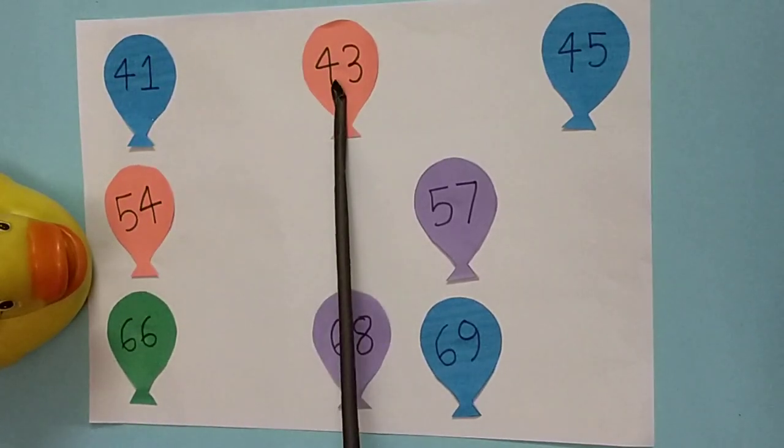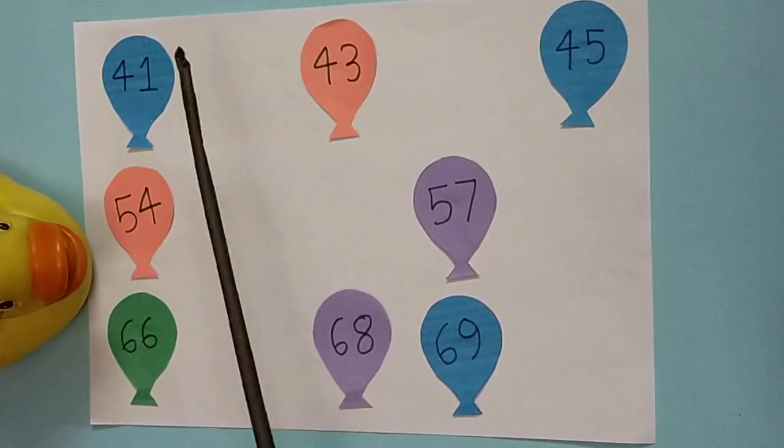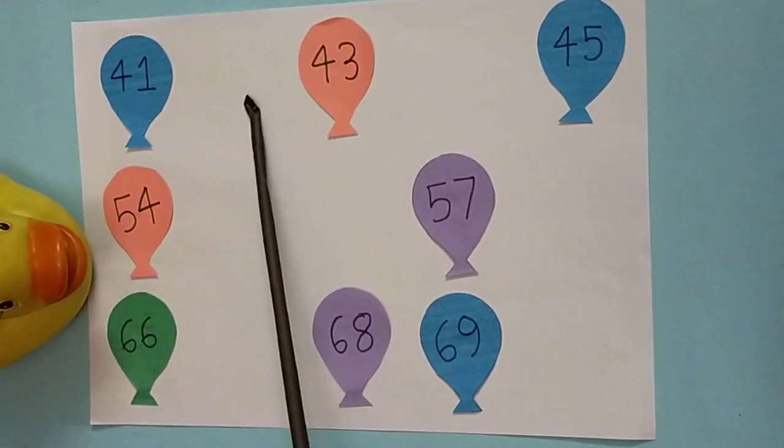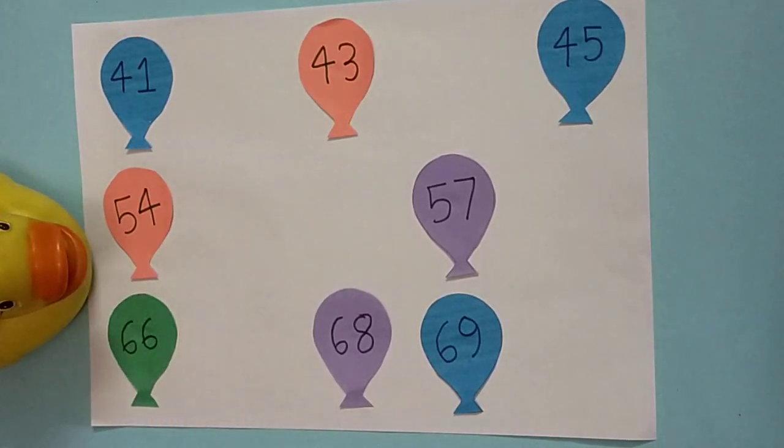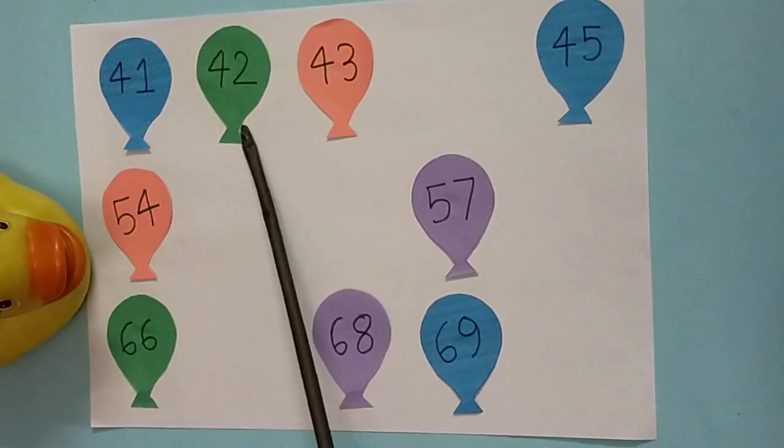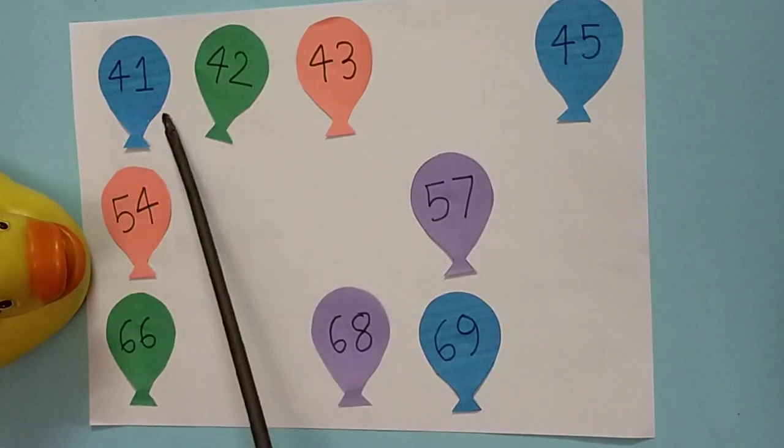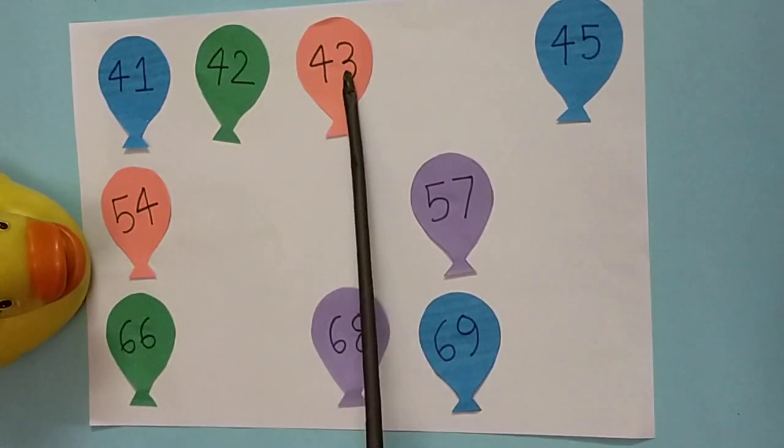Then this one is 43. So what number will be here? Can you see 41? Then 42. Very good. Very good. Here is 42. Now 41, 42, then 43. What comes next before 45?